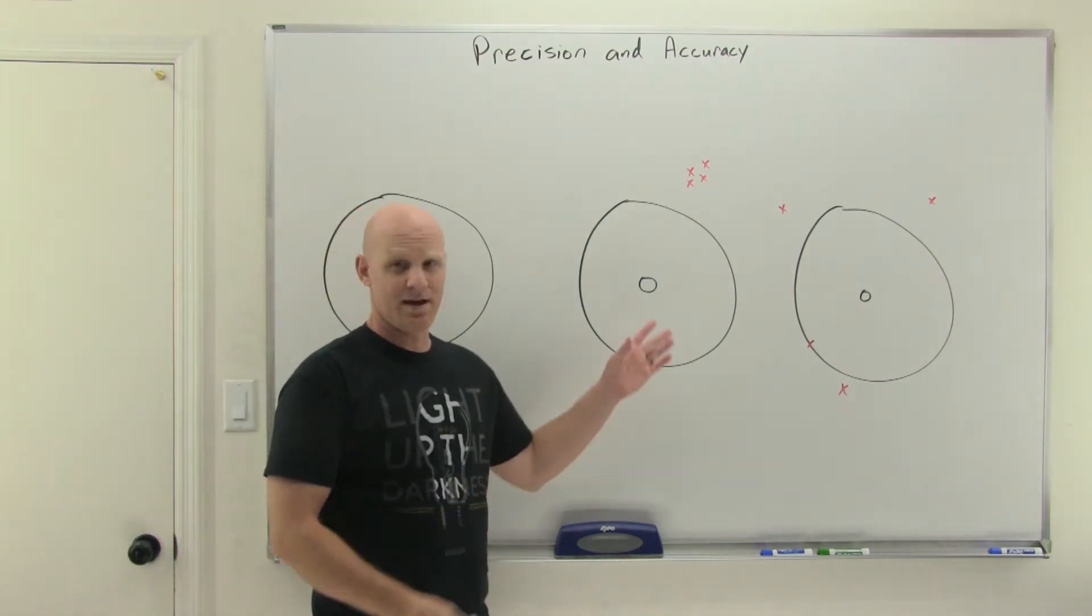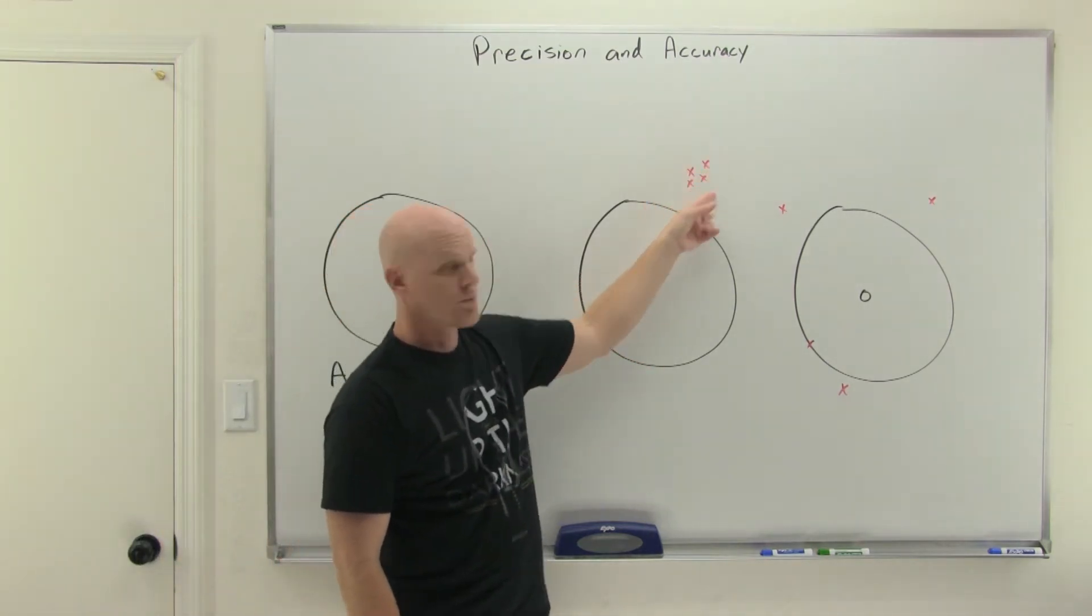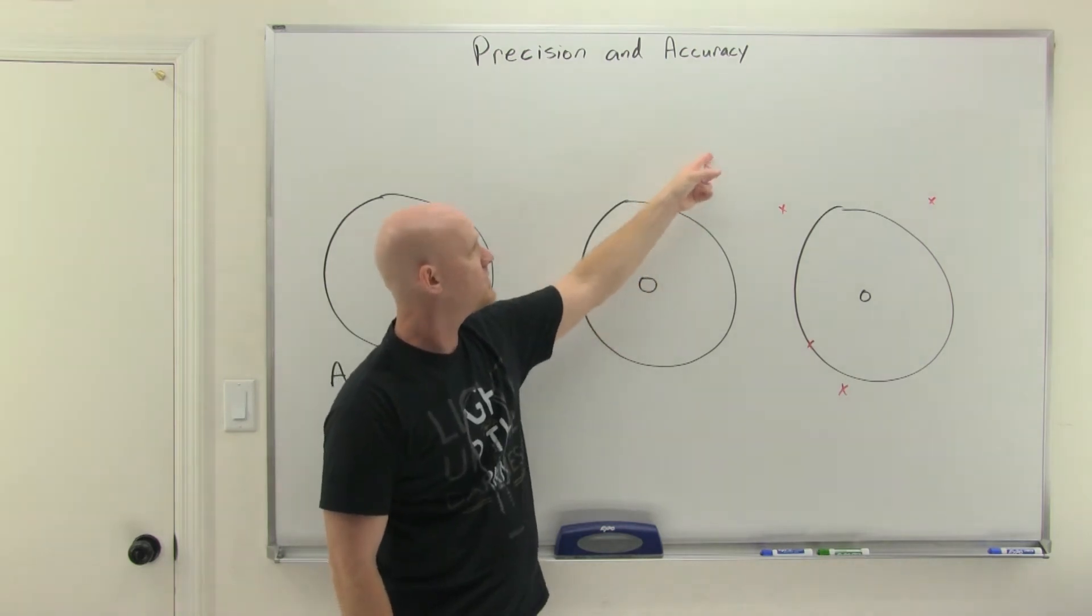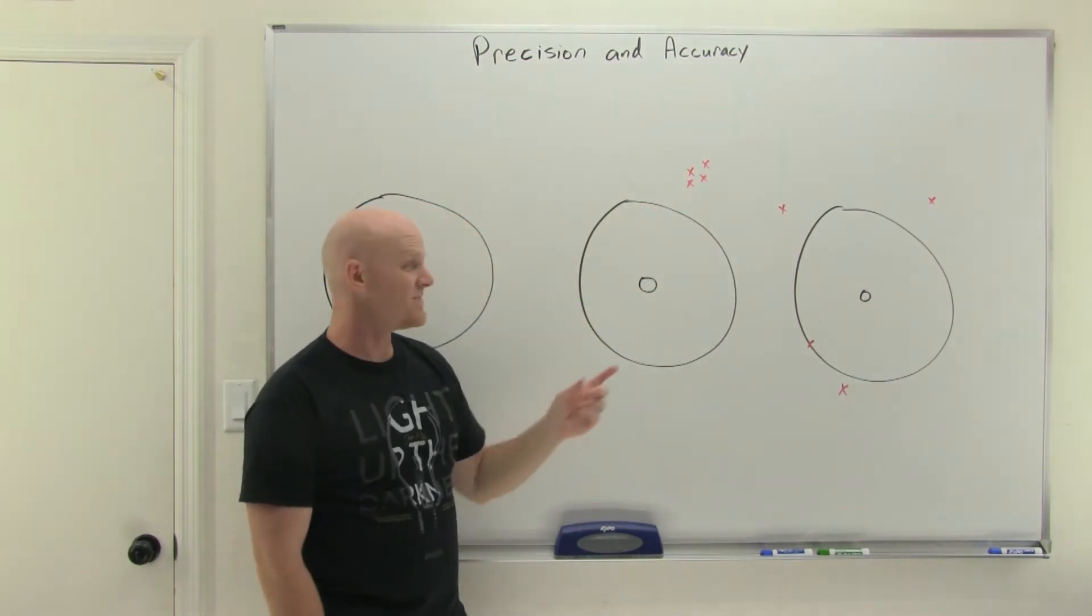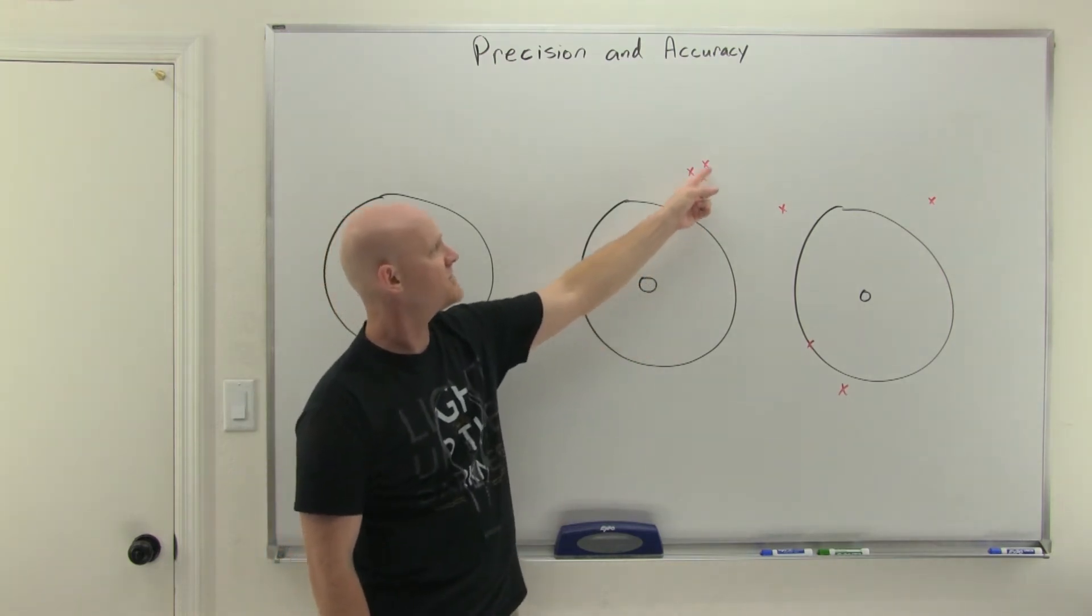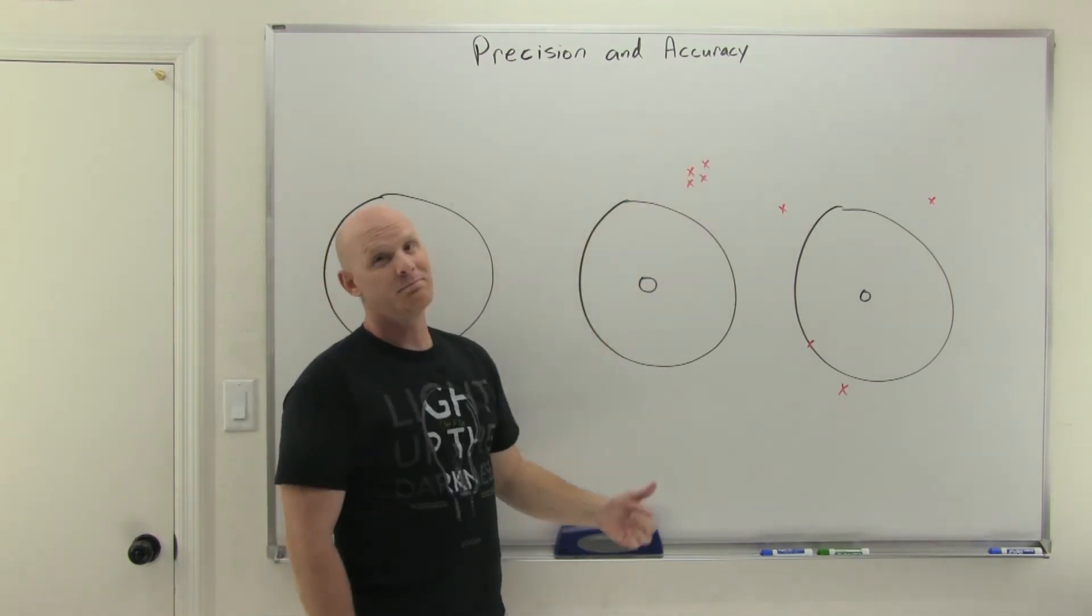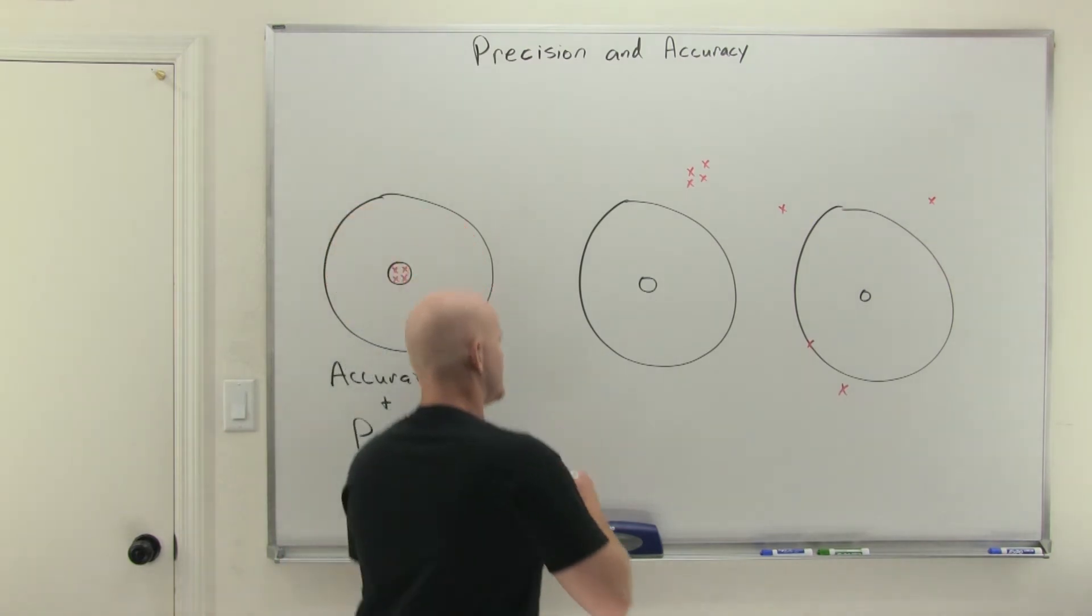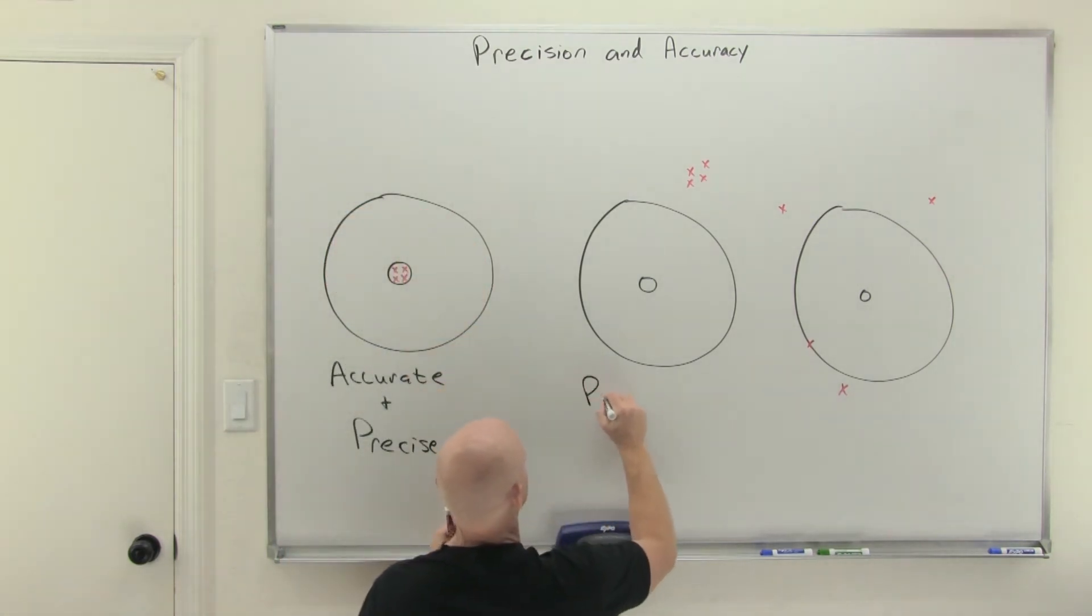In this next example, I've got a nice little grouping here. They're all close together. Unfortunately, my aim is off, and I didn't get close to the bullseye at all. So in this case, my shots are all very repeatable, but they're not very accurate. And so in this case, we'd say precise, since they're all close together, but not accurate.